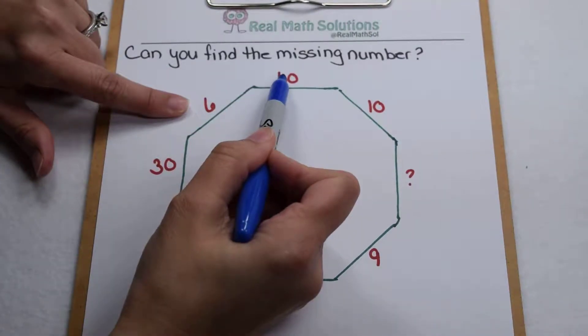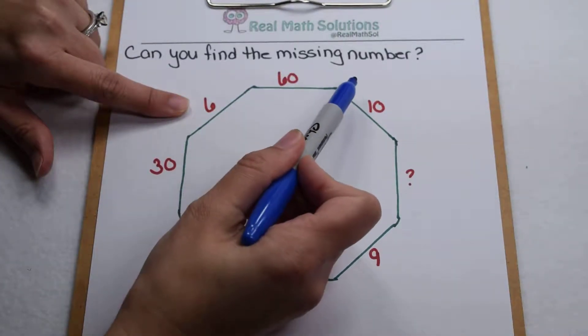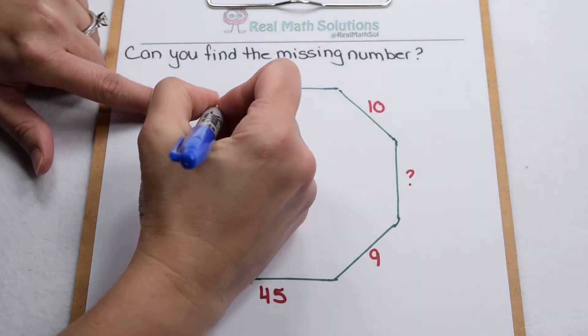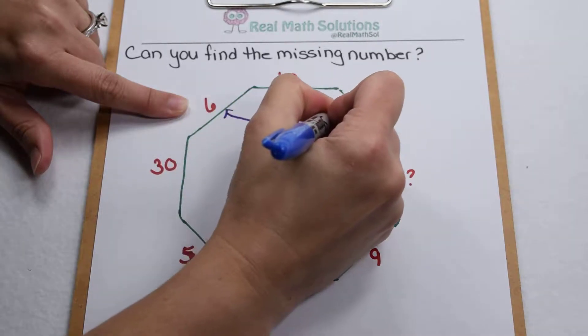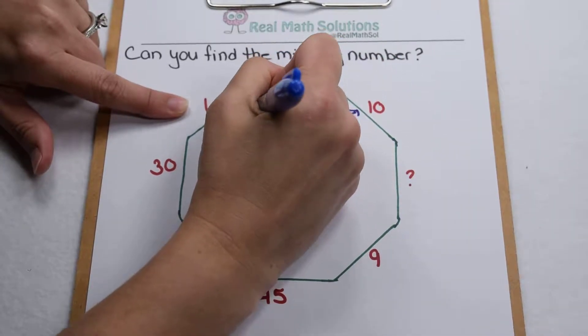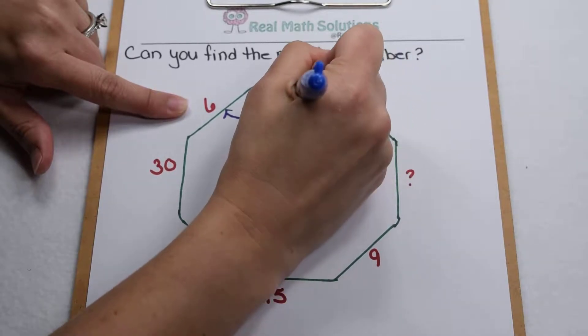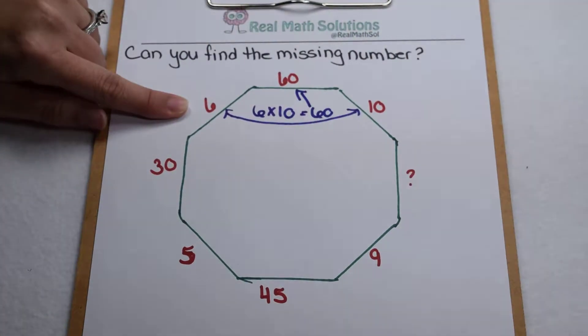Well, 6 times 10 gives me 60. 60 divided by 6 gives me 10. So there's a relationship amongst these three. If I look more closely, I could even rearrange it to say if I multiply these two, 6 times 10, that gives me 60, which is this value right here.